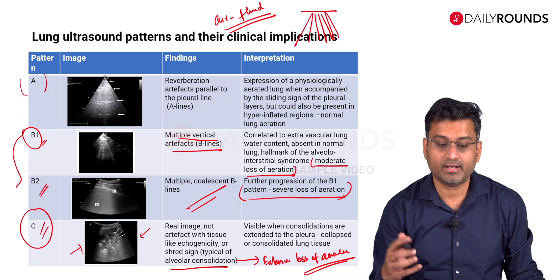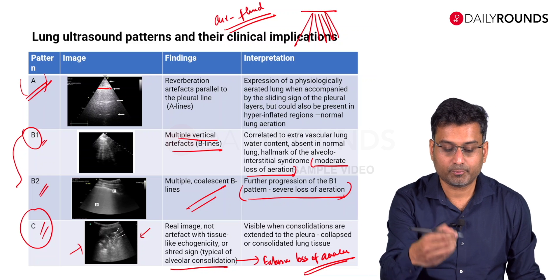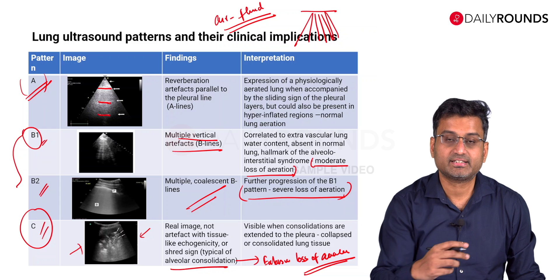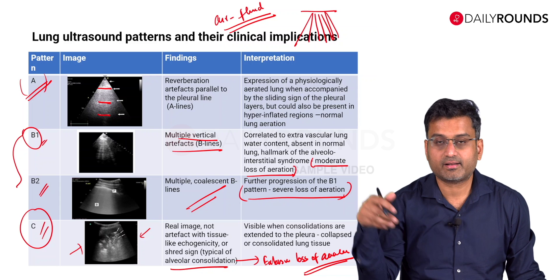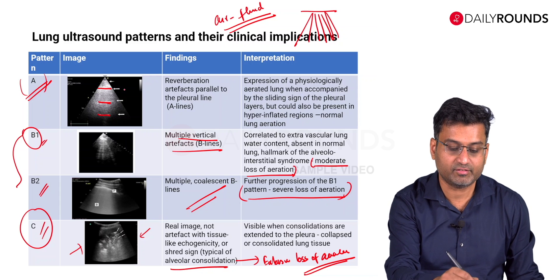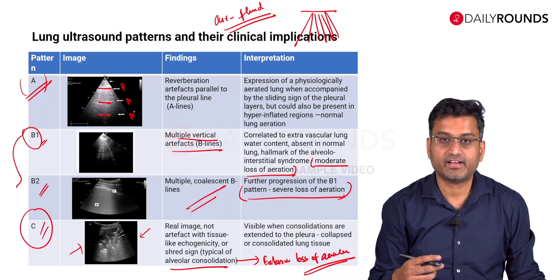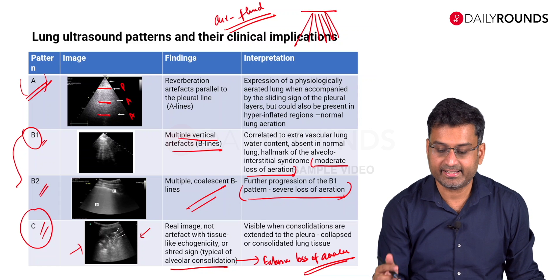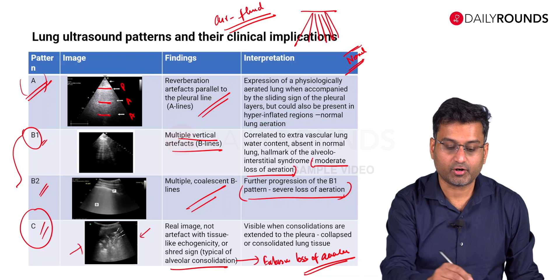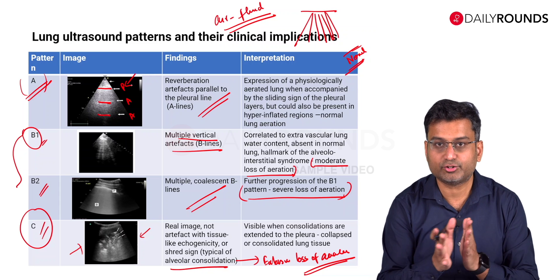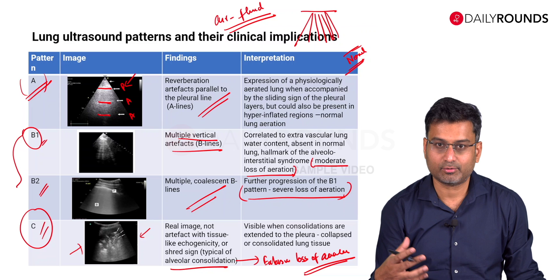The normal lung pattern is your A pattern. The A pattern is seen when you have a pleural line and from it, varying degrees of reverberation artifacts. This is seen when your lungs are completely well aerated and the ultrasound beam is not able to penetrate the lung tissue. You would also be looking for normal lung sliding in the pleural line, which indicates that the visceral and parietal pleura are moving in perfect opposition. This is your baseline lung ultrasound knowledge.